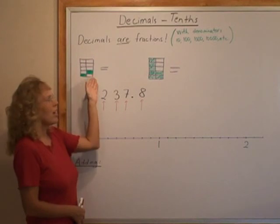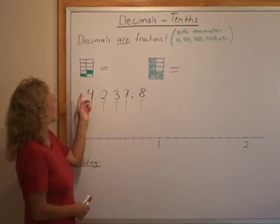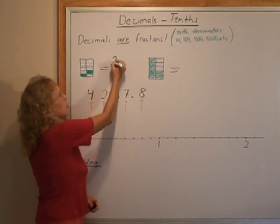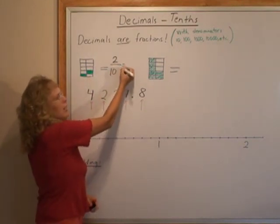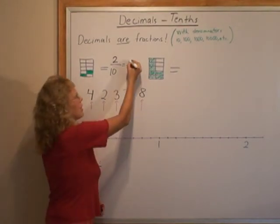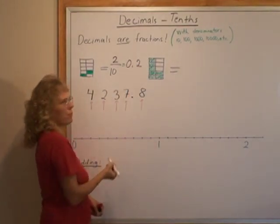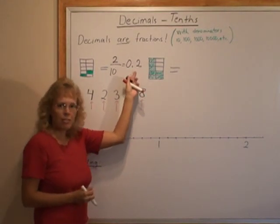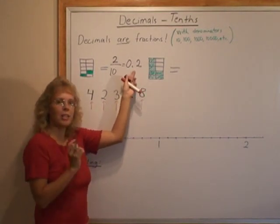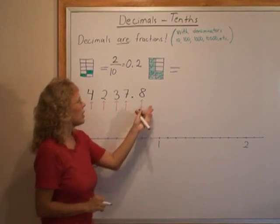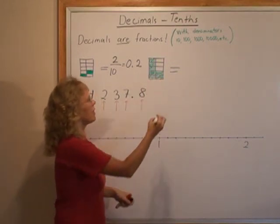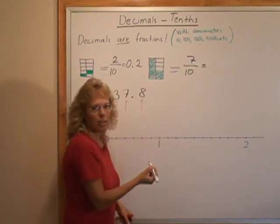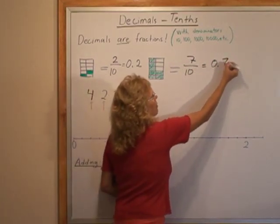I just have to divide my one whole into ten parts. Here I have two parts that are colored, so this is the fraction two tenths, and as a decimal we write it as 0.2. The number after the point tells you how many tenths, and here I have 1, 2, 3, 4, 5, 7 tenths. As a decimal this is written as 0.7.